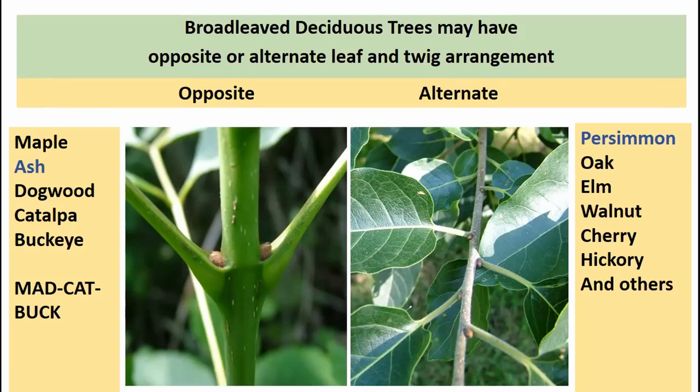Most other native hardwood species we'll run into are alternate — things like persimmon, oaks, elms, walnut, cherries, hickories, and many others. The opposites are the unusual ones; many more species fall in the alternate group.